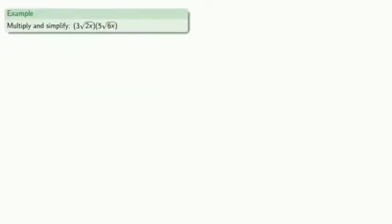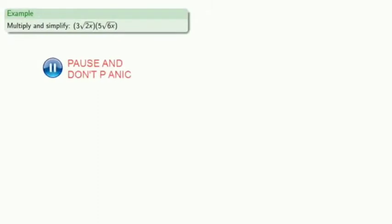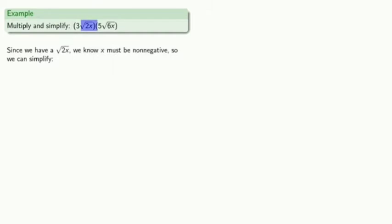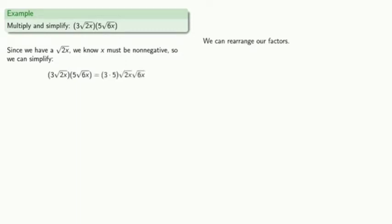Let's multiply and simplify this expression. We might begin by noticing that since we have a square root of 2x, we know that x itself must be non-negative. And so we can simplify. We can rearrange the factors — let's put all of the things outside the square root together, the 3 and the 5, and let's put the square roots together: square root of 2x and square root of 6x.